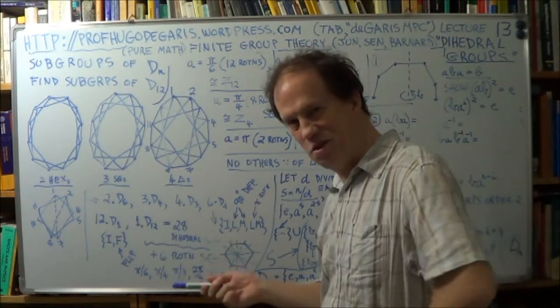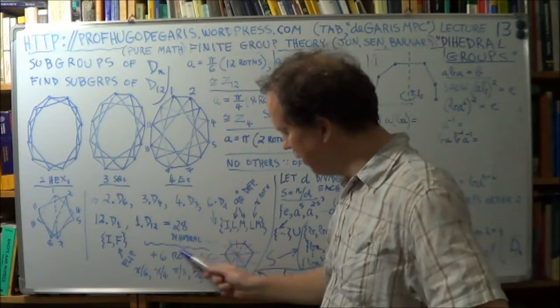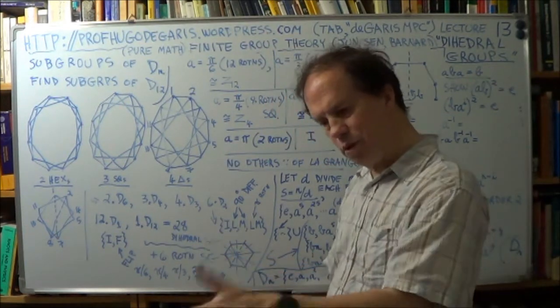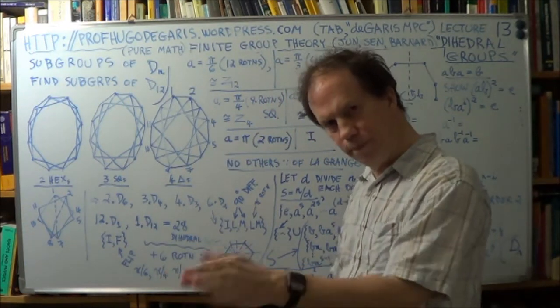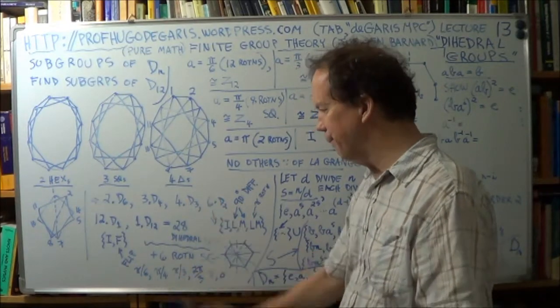It's got to be by getting into the nitty gritty in the details. So you have 28 dihedral, in other words, involving flip type operations. Okay, 28 of them.